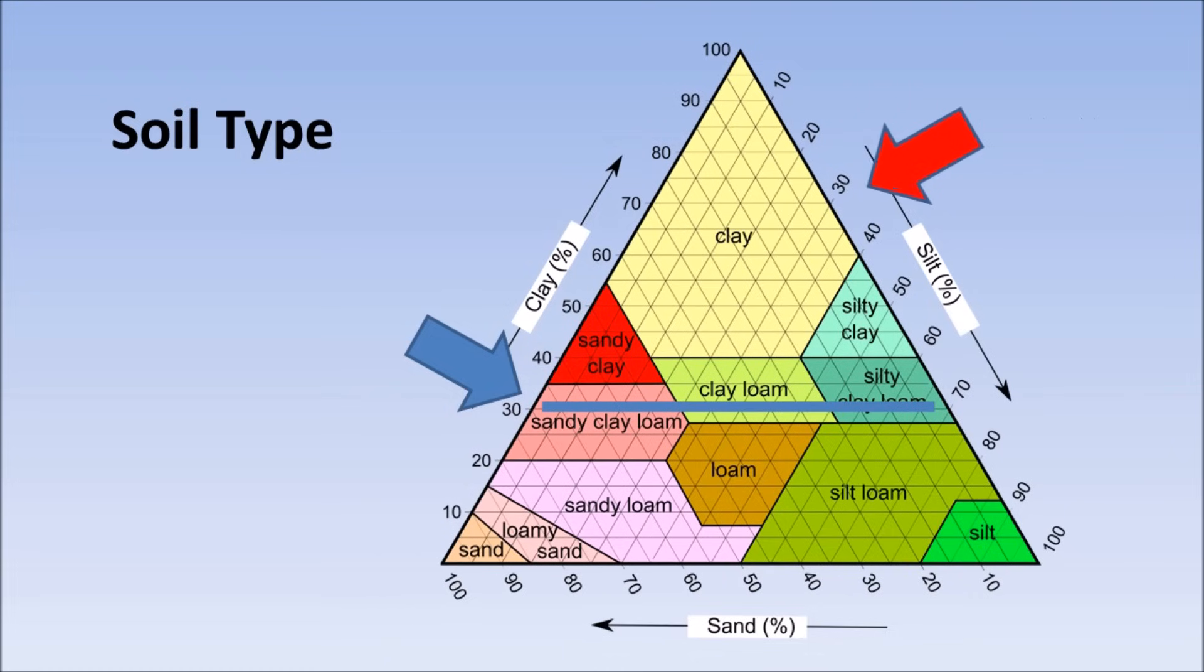Next, we find our silt value, 29% on the right side of the triangle, as indicated with the red arrow. We then draw a line from this point to the sand side of the triangle, the bottom of the triangle, again following the lines of the triangle.